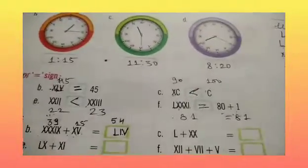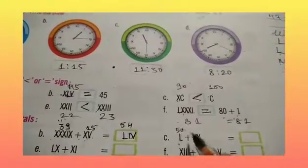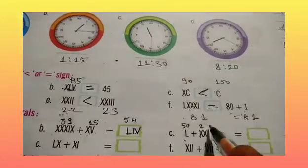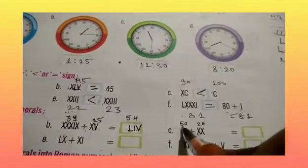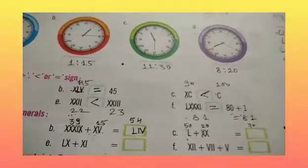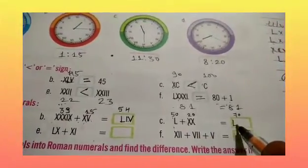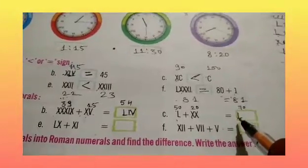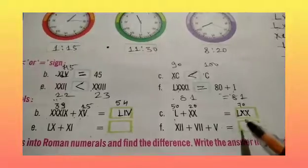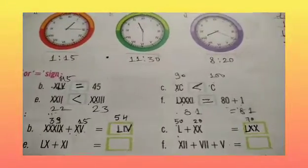Now part C. L is 50, 10 and 20, so 20. Now 50 plus 20 is 70. So how we will write 70? We will write 50. Symbol for 50 is L. We will write 10, 20. So 50, 60 and 70. Okay children?